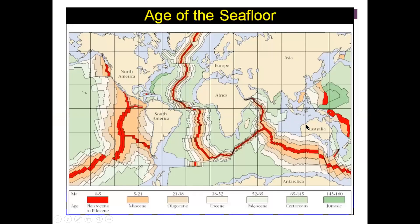Now we'll look at the age of the sea floor. Red indicates the youngest crust, and as you move outward from the red, the crust gets older and older. These boundaries are along oceanic ridges — here we have the Mid-Atlantic Ridge, which is a spreading center where new oceanic crust is being formed. Right along the ridge you have the youngest material, extending outward to the oldest.